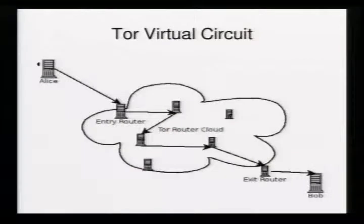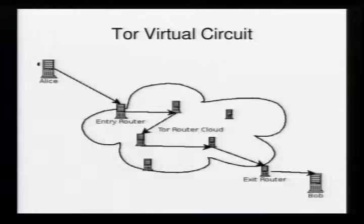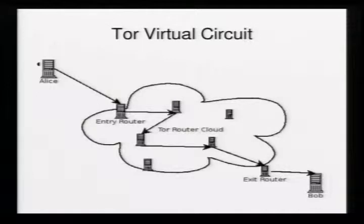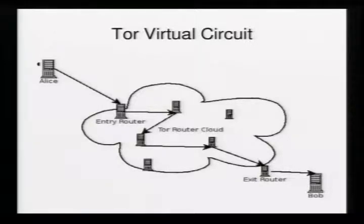Visually, Alice wishes to talk to a server that Bob is running. Alice makes a connection to an entry router into the Tor network, and only after that connection goes into the established state will a virtual circuit actually be constructed. That established characteristic is important for the remainder of the talk. The links between Alice and the entry router are unencrypted. From there, traffic is completely encrypted as it bounces through the router cloud, finally hitting a randomly selected exit router, then unencrypted for communication to Bob's actual server.